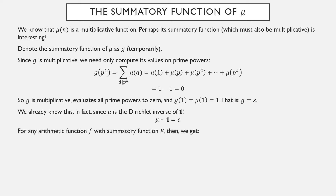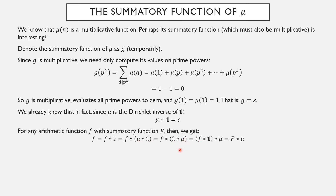Now suppose f is any arithmetic function and let its summatory function be capital F. We have f equal to f convolved with the identity element ε. Since the Möbius function is the Dirichlet inverse of the one function, convolution with ε is the same as convolving with µ * 1. Using commutativity and associativity of Dirichlet convolution, we can rearrange to get f convolved with the one function — that is, its summatory function capital F — convolved with µ. Overall, f equals the convolution of its summatory function F with µ.